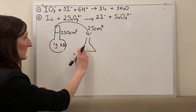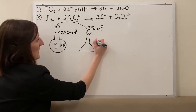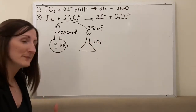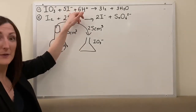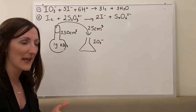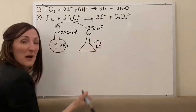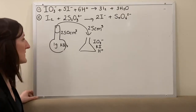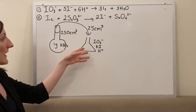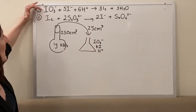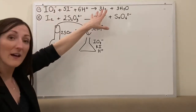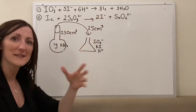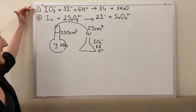In the conical flask we have our 25 cm³ of potassium iodate solution. We add potassium iodide in excess — we don't want it to run out, we want to make as much iodine as possible. We acidify it, for example with sulfuric acid written as H⁺ ions. The reaction takes place and we get iodine forming and water as well. We can see the reaction happening because iodine gives that yellow-brown colour in solution.